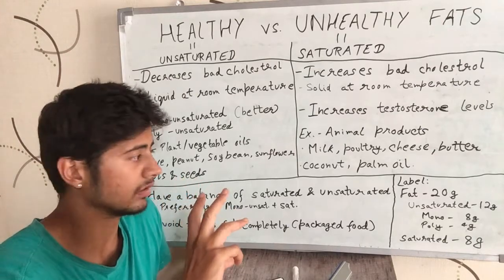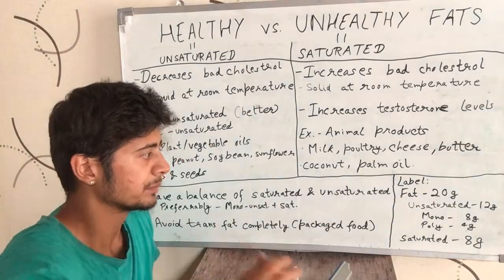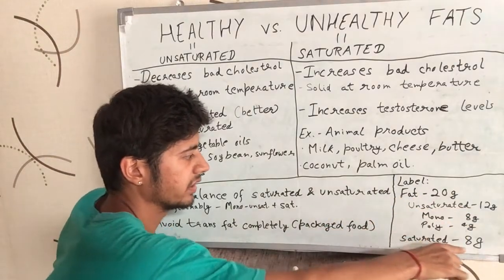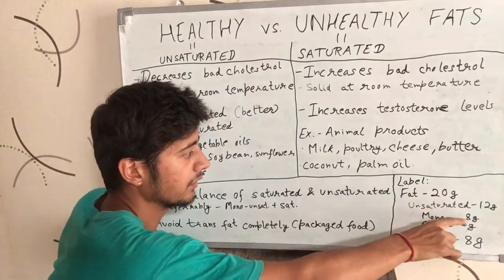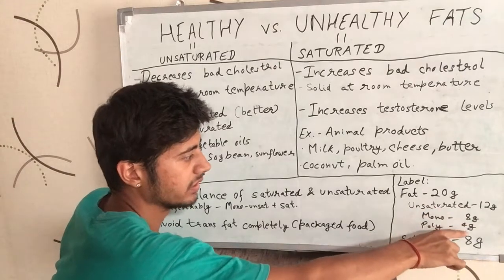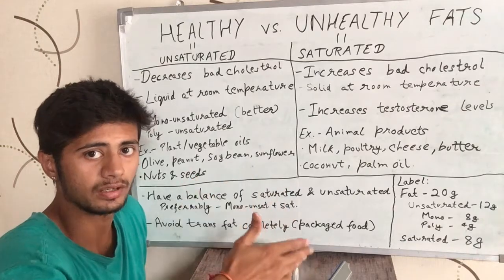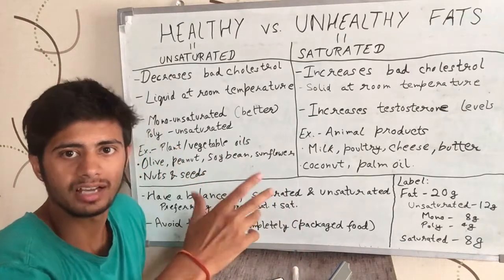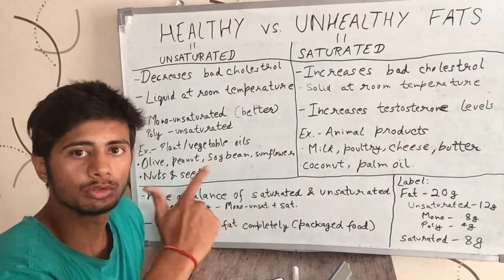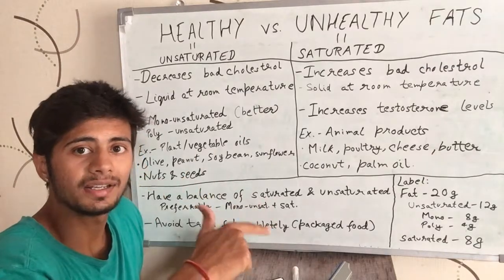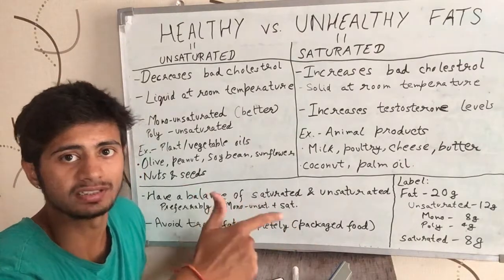When it comes to labeling: if you pick something from a store and see a nutrition label, and it says total fat is 20 grams, then unsaturated fats are 12 grams and saturated fats are 8 grams — with monounsaturated fat being 8 grams and polyunsaturated fat being 4 grams out of that unsaturated portion. This simply means that in a 100-gram serving, there were 20 grams of fat total: 8 grams saturated, 12 grams unsaturated, of which 8 grams was monounsaturated and 4 grams was polyunsaturated.